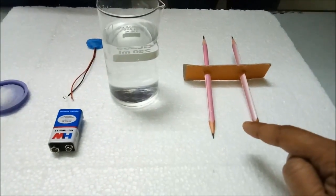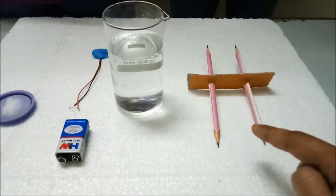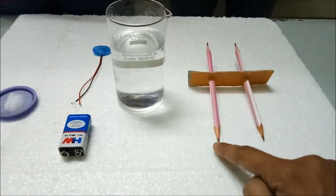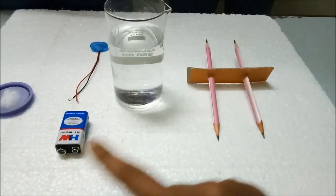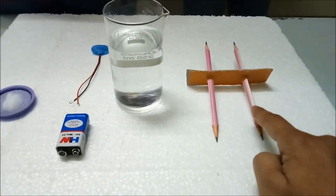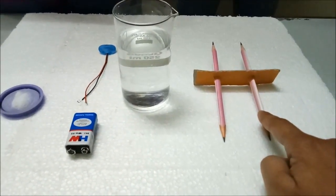These are graphite pencils which can be used as electrodes. If I connect this with the positive terminal it will become anode, and if I connect this as negative terminal this will become cathode.